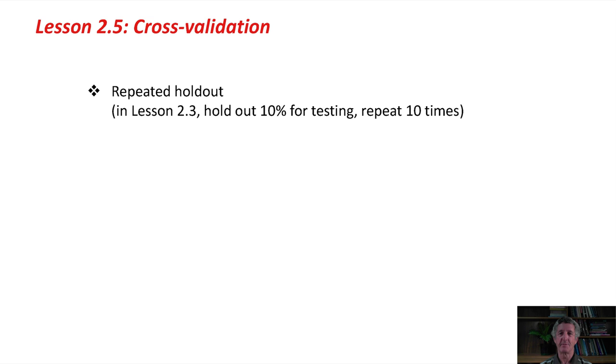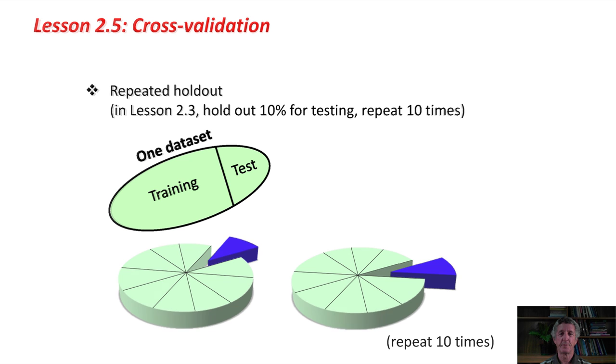In a previous lesson, we held out 10% for testing, and we repeated that 10 times. That's the repeated holdout method. We've got one data set, and we divided it independently 10 separate times into a training set and a test set. Now, with cross-validation, we divide it just once, but we divide it into, say, 10 pieces. Then we take 9 of the pieces and use them for training, and the last piece for testing. Then, with the same division, we take another 9 pieces and use them for training, and the held-out piece for testing. We do the whole thing 10 times, using a different segment for testing each time.